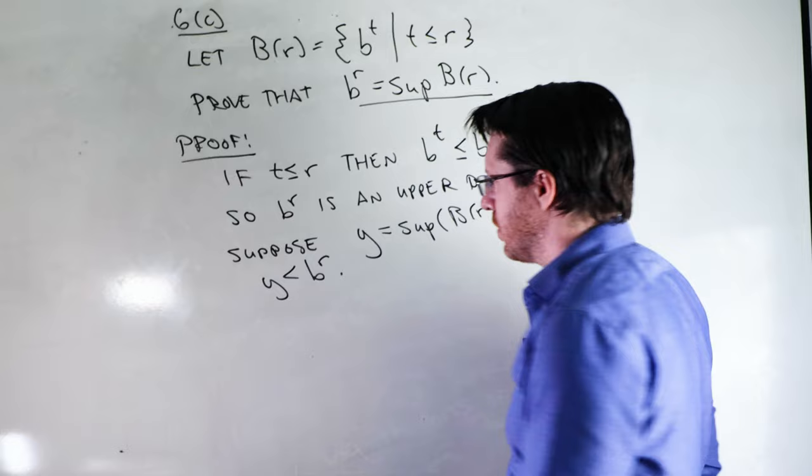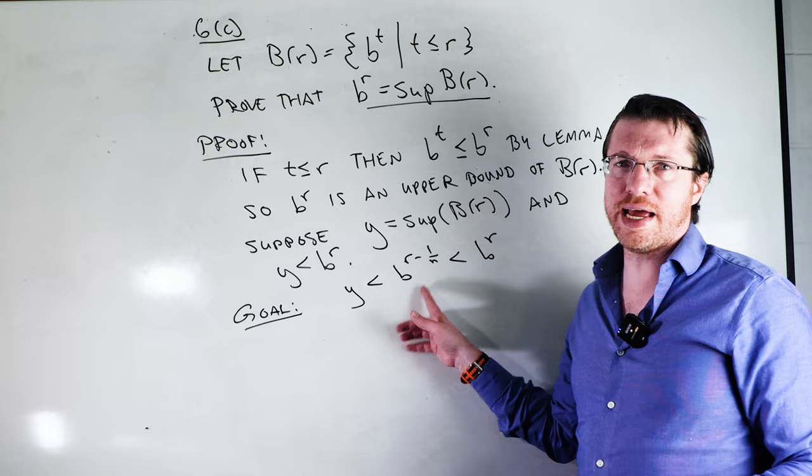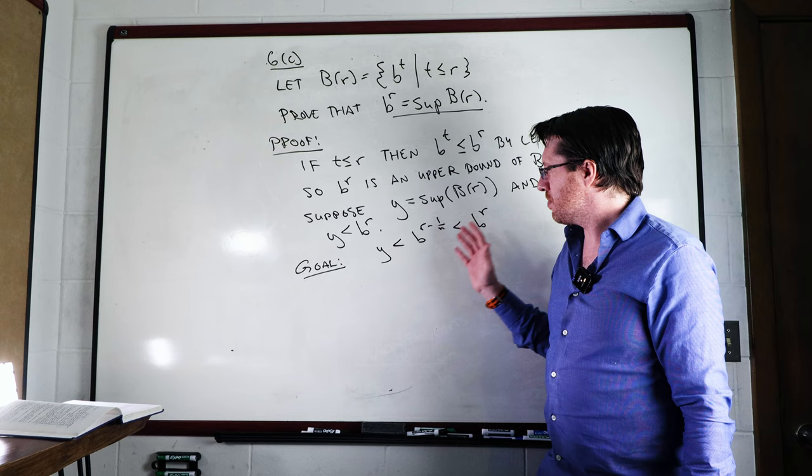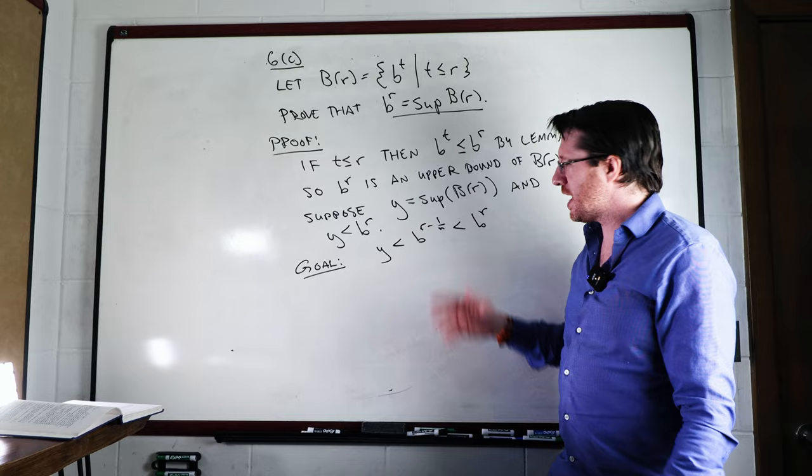Let me write our goal. So our goal here is we're going to try to nudge something underneath R. So we're going to have R minus one over N and this is going to be less than B to the R. We just don't know what that N should be. Morally, we know that if N is large enough, then it's going to get very, very close to BR and it's going to be larger than Y.